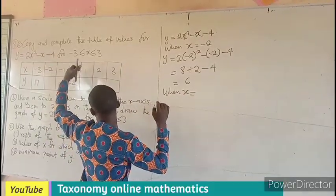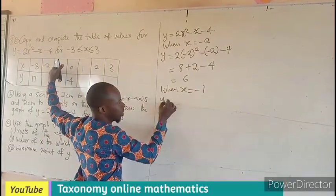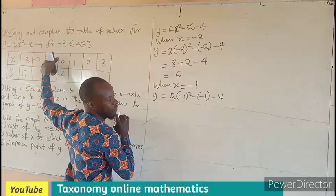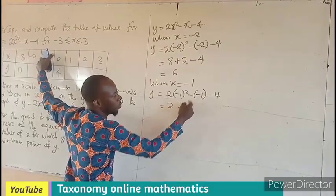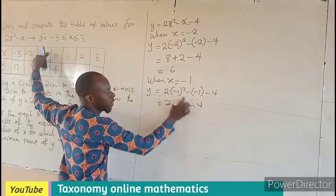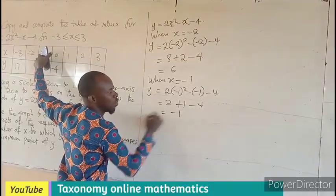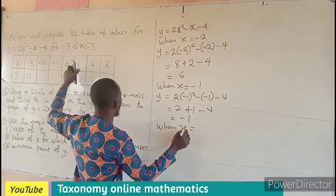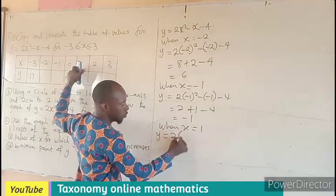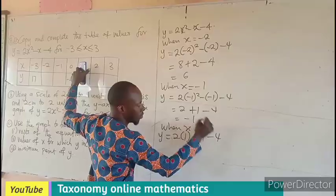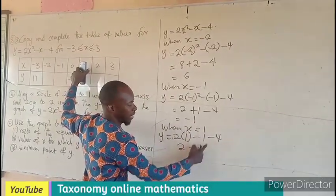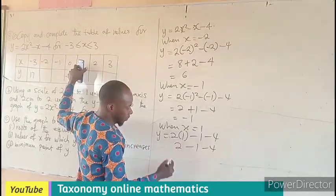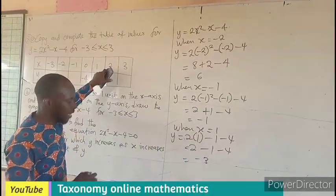When x is negative 1, y becomes 2(-1)² - (-1) - 4. This is 2 × 1 = 2, then minus 1 minus 4. This equals 3 minus 4, which gives us negative 1. So when x is negative 1, y equals negative 1. When x is positive 1, y would be 2(1)² - 1 - 4, which equals 2 - 1 - 4 = negative 3.